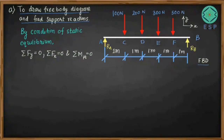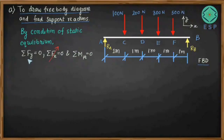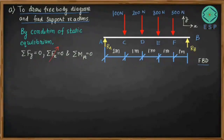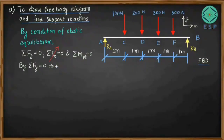As you can see from the figure, there is no horizontal force acting on the beam, so there are no forces in the X direction. We can directly neglect ΣFx = 0. For us, only ΣFy = 0 and summation of moments about any particular point on the beam equal to zero are relevant. We will follow the sign convention: upward forces are taken as positive and downward forces as negative.